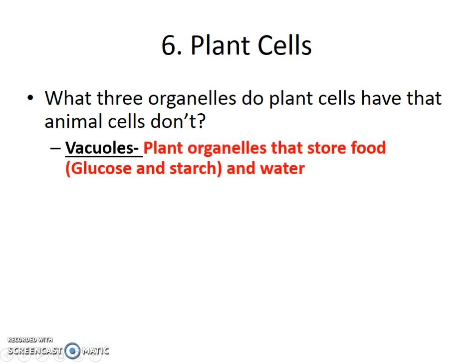Vacuoles are organelles inside a plant that store food — in this case, starch and glucose — as well as water. Vacuoles just hold on to that food and water. Any time a plant makes starch or glucose in photosynthesis and doesn't use that food immediately, it stores it in its vacuole.